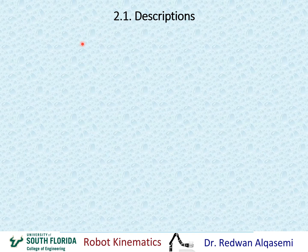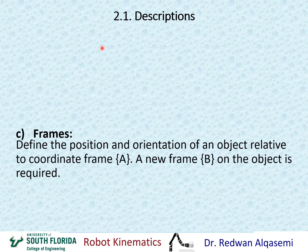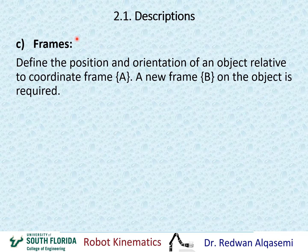Now that we've defined position only and orientation only, we're going to define both position and orientation in space. In this case, we call it frames. We define the position and orientation of an object relative to coordinate frame A, and a new frame B on the object is required, exactly the same as we did in the orientation-only case. We describe frame B relative to frame A — both position and orientation.